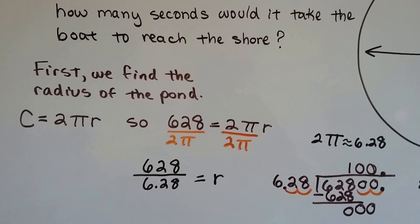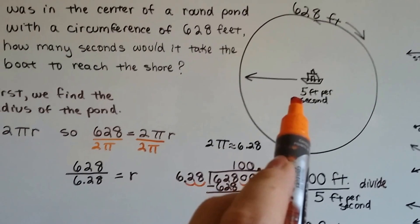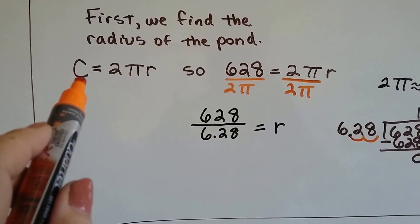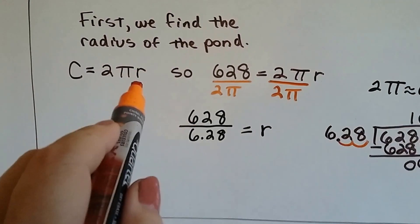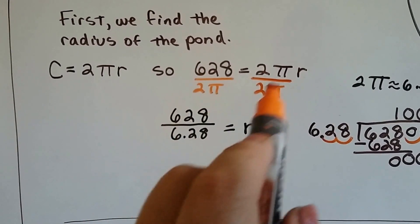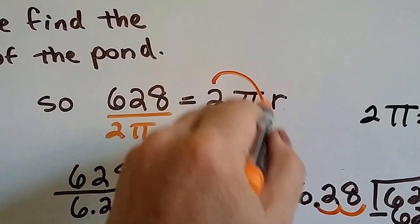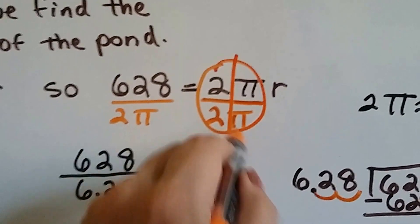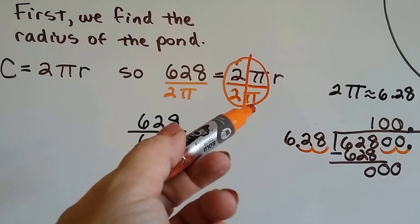The first thing we find is the radius of the pond. So we know that the circumference is 628 feet, so we use c equals 2 pi r, and because we're trying to find the radius, what we do is we divide both sides by 2 pi. And then that'll turn this into an invisible one. 2 pi over 2 pi becomes a one.